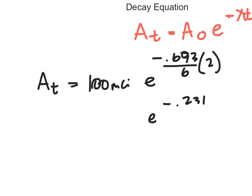And so then if you want to use e to the x on your calculator, you will find that you have 100 millicuries times 0.794.